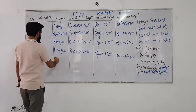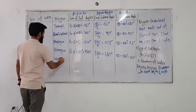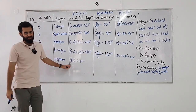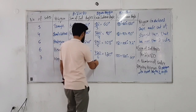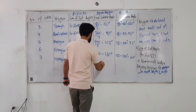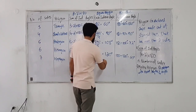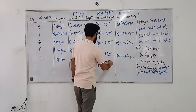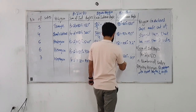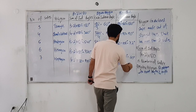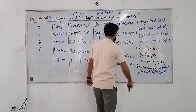What do you call a seven-sided polygon? A heptagon. Seven minus two times 180: five times 180 is 900. Split 900 seven ways, you get 128.57 degrees each. And the exterior angle? 180 minus 128.57 gives you 51.43 degrees.